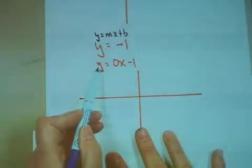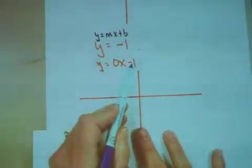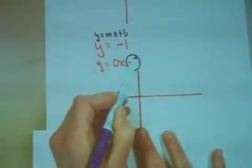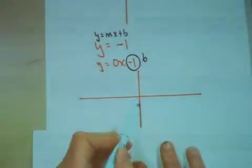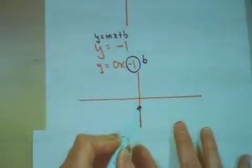So really, we're graphing the line y equals 0x minus 1. This minus 1 is my b value. That means I'm going to start at the origin and go down 1 and put a nice big fat dot.